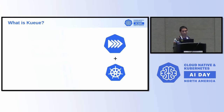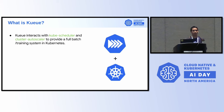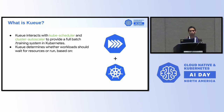Today we wanted to first introduce you to Kueue. Kueue is a job-level scheduler. We call it Kubernetes-native because it interacts with the existing Kubernetes ecosystem, adding to it to provide a full batch system or AI training system on a Kubernetes cluster. Kueue takes decisions on whether a workload or a job should run or wait for resources based on a number of rules.